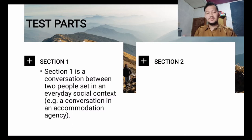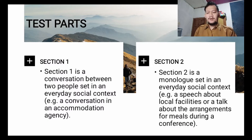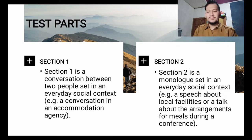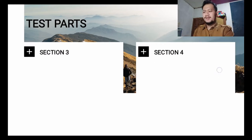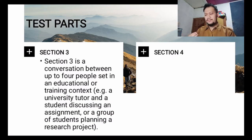The test consists of four sections. Section 1 is about a conversation between two people set in an everyday social context, such as a conversation at an accommodation agency — very general and easy. Section 2 is a monologue set in an everyday social context, which is longer and gets more difficult.